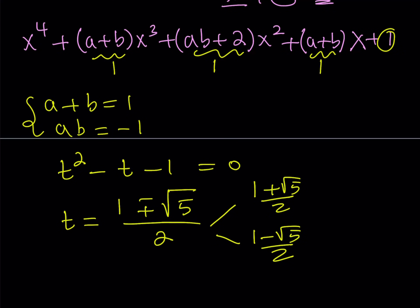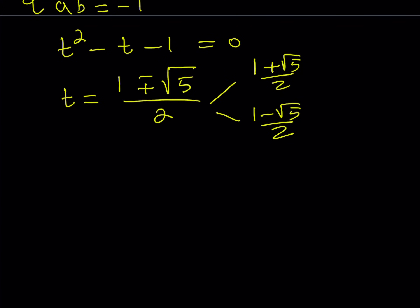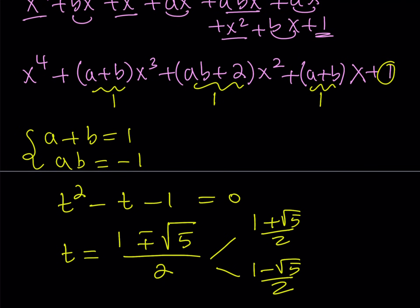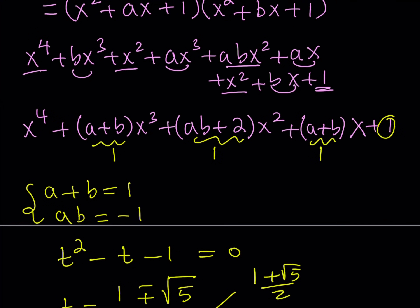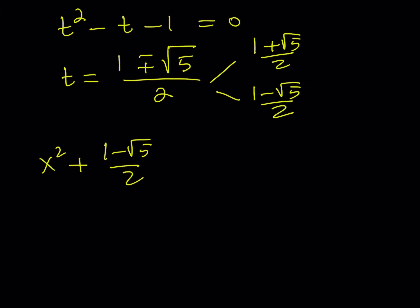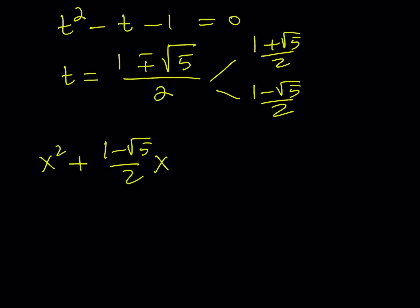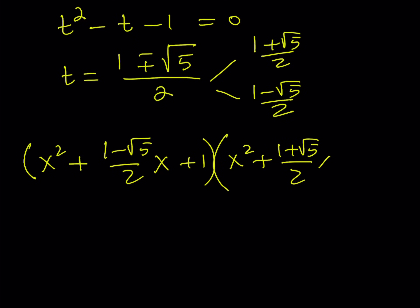Those are the t values, but they are also the a and b values — it doesn't matter which is which because they are interchangeable. So our equation factors into: x squared plus (one minus root five over two)x plus one, multiplied by x squared plus (one plus root five over two)x plus one, equals zero.